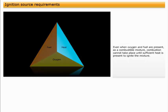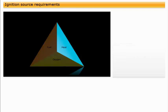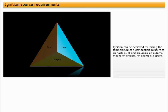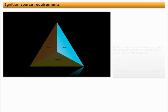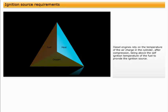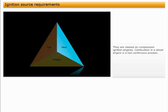Even when oxygen and fuel are present as a combustible mixture, combustion cannot take place until sufficient heat is present to ignite the mixture. Ignition can be achieved by raising the temperature of a combustible mixture to its flash point and providing an external means of ignition, for example a spark. Ignition can also be achieved by raising the temperature of the mixture above its self-ignition temperature. Diesel engines rely on the temperature of the air charge in the cylinder after compression being above the self-ignition temperature of the fuel to provide the ignition source. They are classed as compression ignition engines.